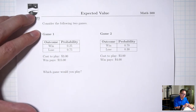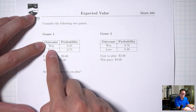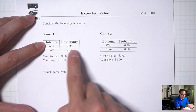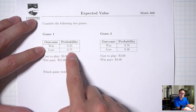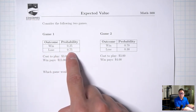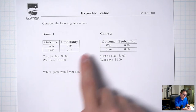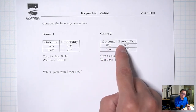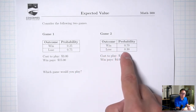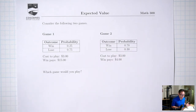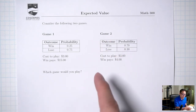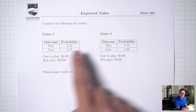For game one, the probability of winning is 0.25, which is 25%. The probability of losing is 0.75, 75%. Game two, the probability of winning is 0.70, which is 70%. The probability of losing is 0.30, 30%. Right off the bat, game two has a higher probability of winning than game one.